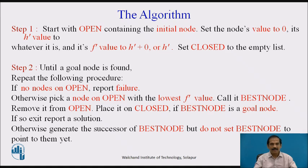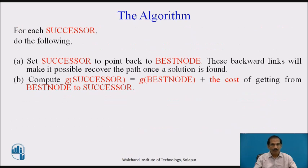Generate the successors of the best node but do not set the best node to point to them yet. For each successor encountered, set the successor to point back to the best node. These backward links will make it possible to recover the path once a solution is found. Compute G(successor) equal to G(best node) plus the cost of getting from the best node to the successor.